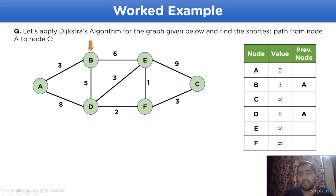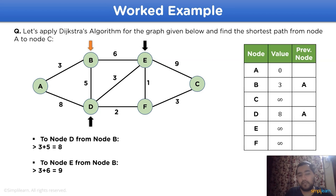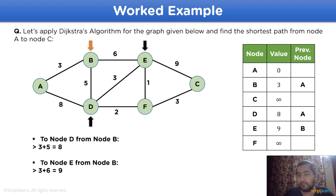Moving on, let's choose the next current node, which is node b, because the shortest path in the table is 3, which is less than 8. The directly connected nodes to node b are node d and node e. We mark the shortest distance from node b to node d: 3 plus 5 equals 8. And from node b to node e: 3 plus 6 equals 9. Updating the shortest path table, node d has value 8 and node e has value 9 with previous node as b.